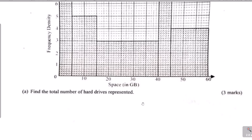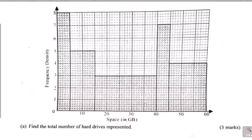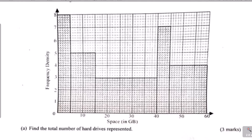Let's go to the first part of the question. We are supposed to find the total number of hard drives represented. The total number of hard drives refers to the total frequency. Looking at the histogram, we have frequency density and space in GB. To get frequency density, we divide frequency by the class width. Therefore, to get the frequency we take frequency density multiplied by the class width. The total frequency also represents the total area of all the shaded bars in the histogram.